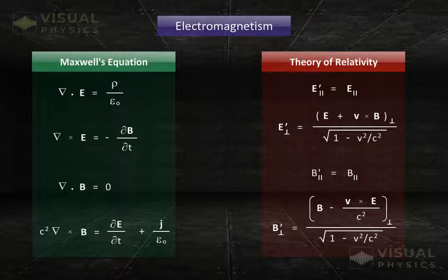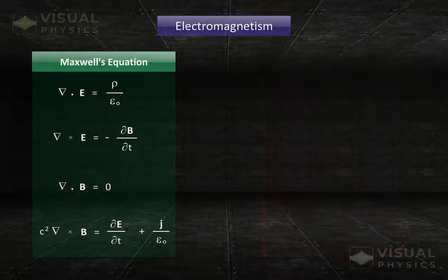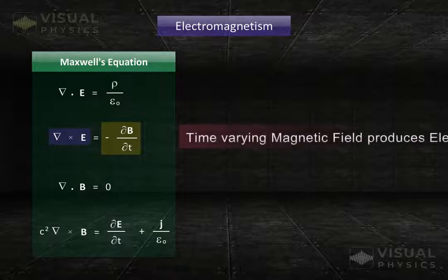However, even without going into the details of Maxwell's equations, we can see that a time variable magnetic field produces electric field and a time variable electric field produces magnetic field.